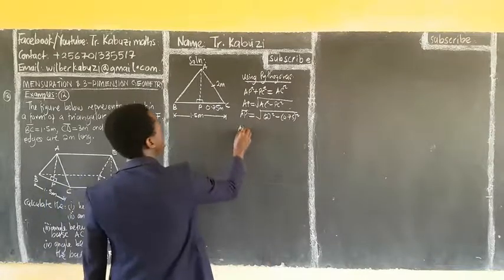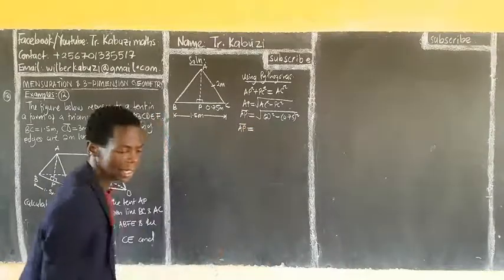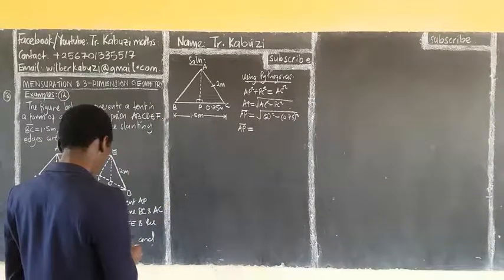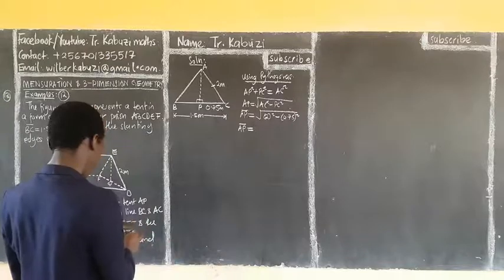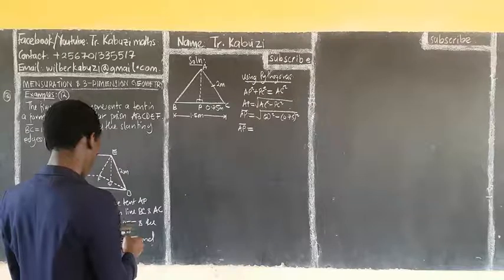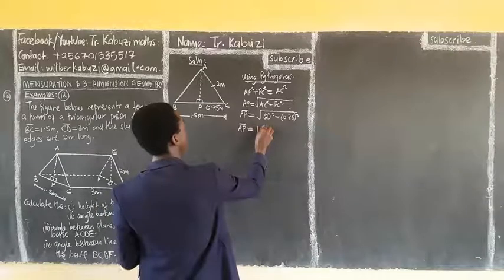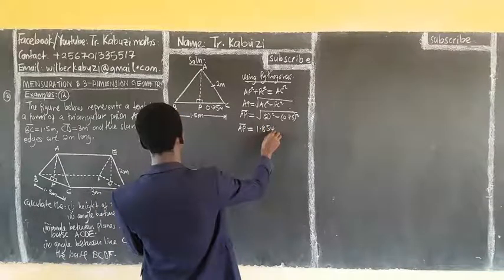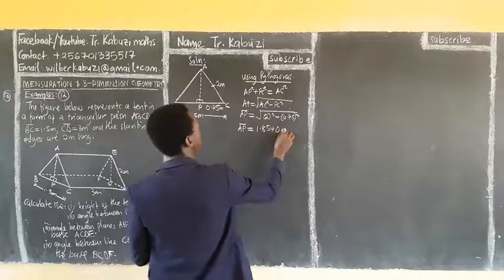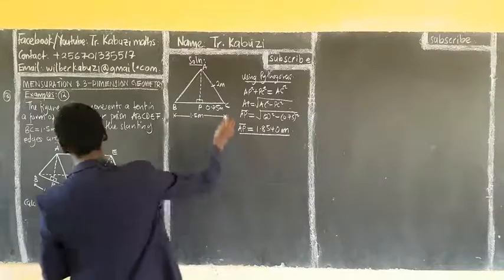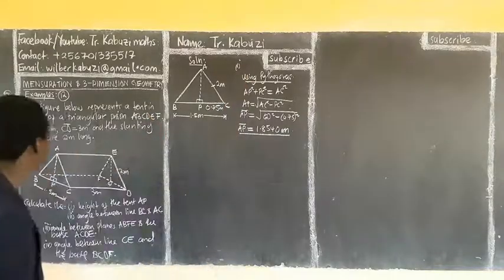First start with the calculation — the answer you get is approximately 1.8540 meters. So that is Roman numeral 1 answer. Roman numeral 2: we want to get the angle between BC and AC.